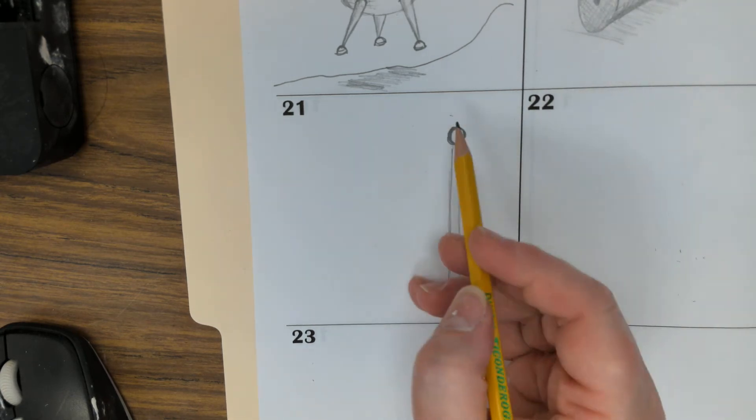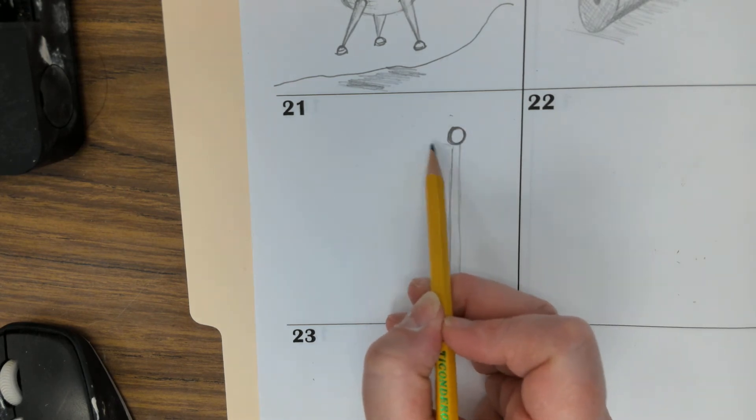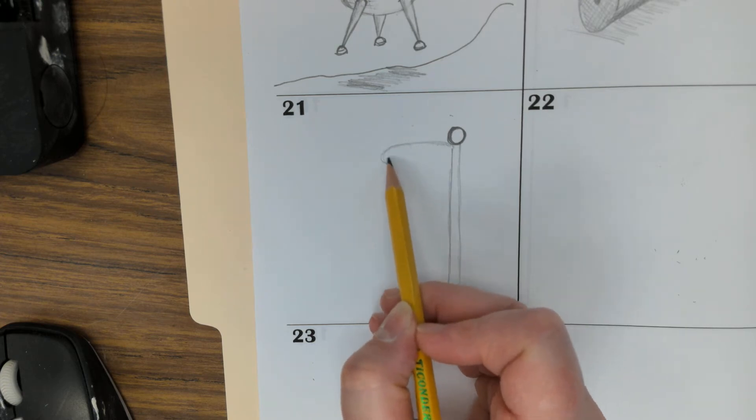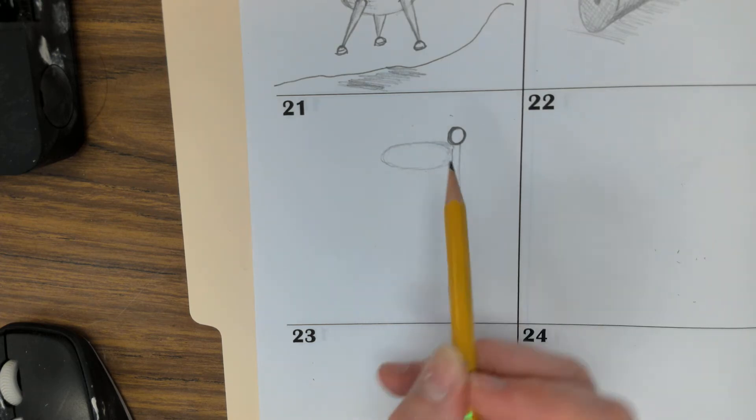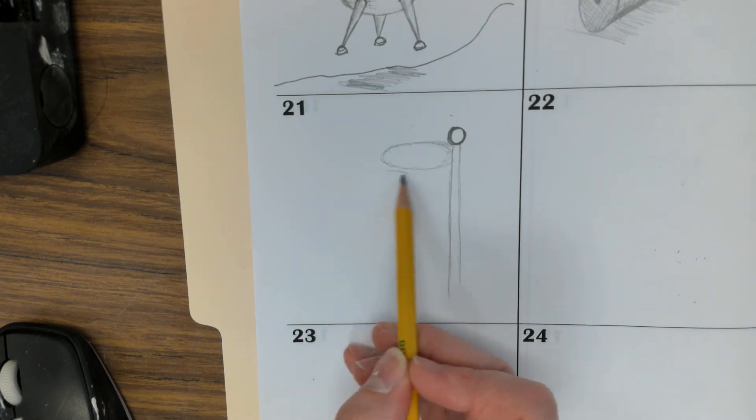And we're going to start here. Let's do an ellipse, a long and thin one right here. It'll help guide our line. And we're going to do another one here. So this one will be stacking underneath.